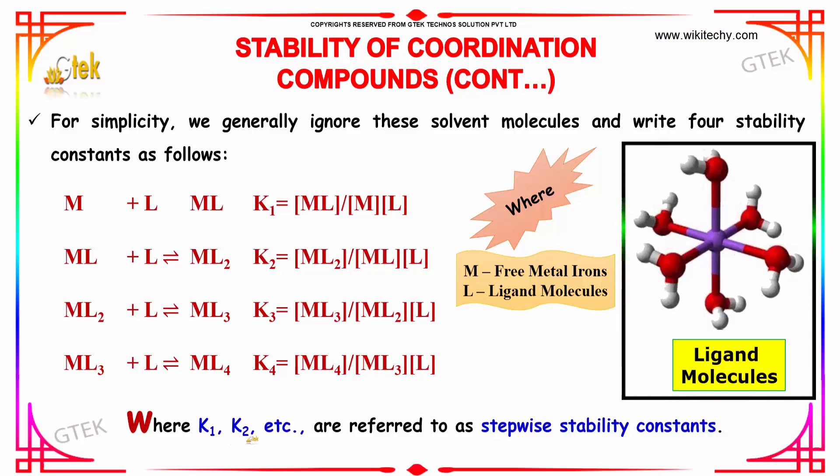So, where K1 and K2, these things are referred to as stepwise stability constants.